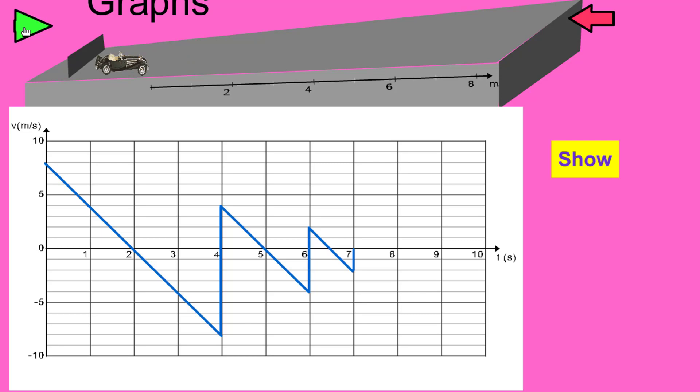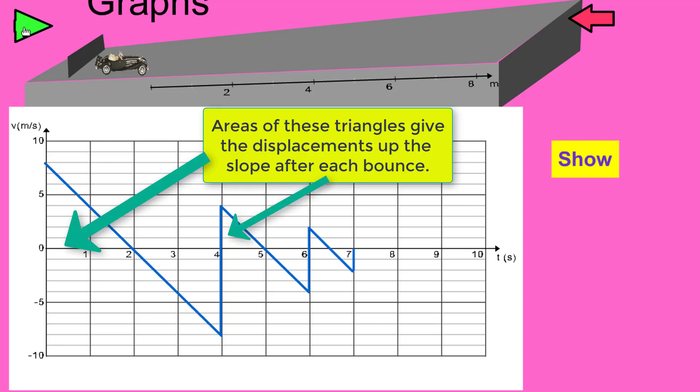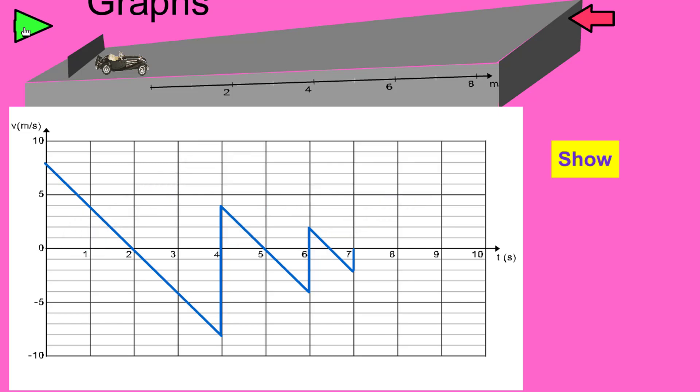The area of the graph above the zero line gives you the displacement up the slope, and you can see the displacement getting smaller with each bounce. That's the velocity-time graph for an object which is bouncing, and you can equally apply that to an object like a ball which is dropped from a height and bounces off the floor.